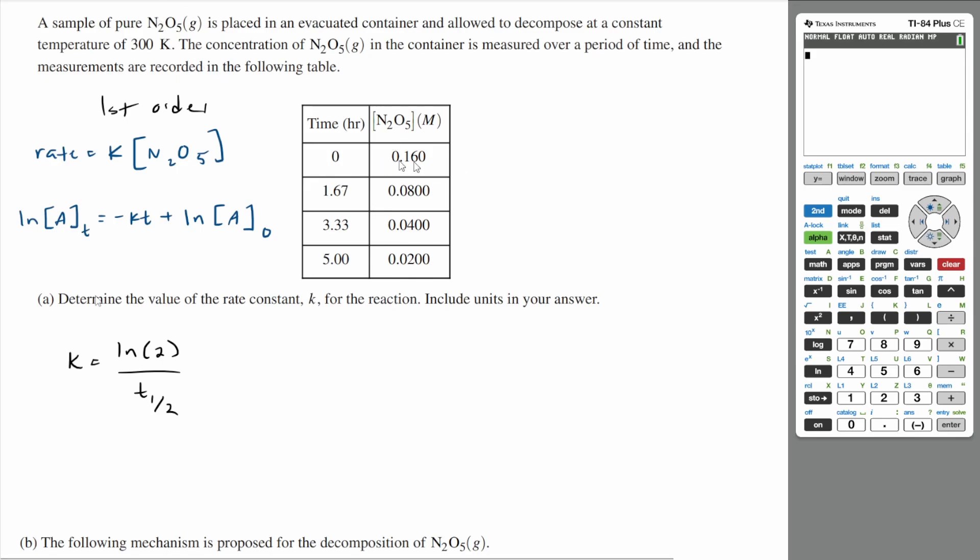If you look at your table right here, your concentration, it halves every 1.67 hours. And that pattern continues for the rest of the table. Every 1.67 hours, you can see that the concentration halves. So our half-life is going to be 1.67 hours. So our k is going to be the natural log of two over 1.67 hours. And if you do out the math on that, the natural log of two divided by 1.67,